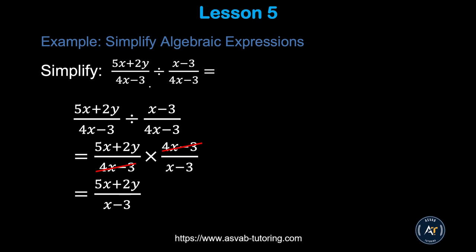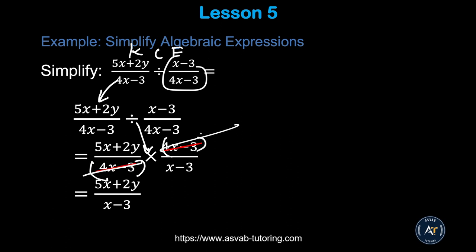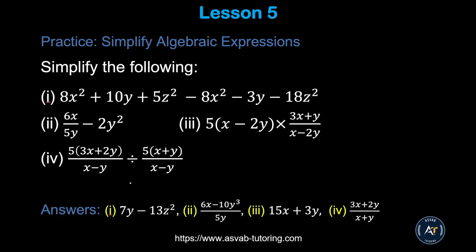Now let's divide fractions. If you follow our lesson 1, dividing a fraction uses keep-change-flip: keep whatever you have on the left side, change the division sign to multiplication, and flip the second term. When you flip it, you can also cross out like terms or expressions. That gives you (5x + 2y) over (x − 3). There are a couple more examples — pause the video and try to do them by yourself to get a high score on the math knowledge section.